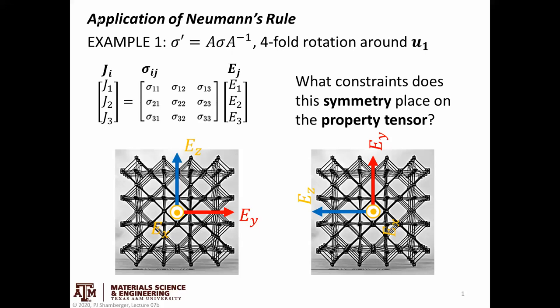Here we're going to work through an example of an application of Neumann's rule. Make sure that if you haven't seen it yet, you watch the video on deriving Neumann's rule so you'll know where we're picking up from. This basically picks up right where that left off. The example we're going to think about is a four-fold rotation axis around lattice parameter u1. This is a specific symmetry operation.